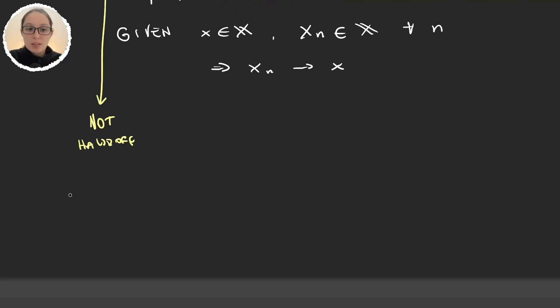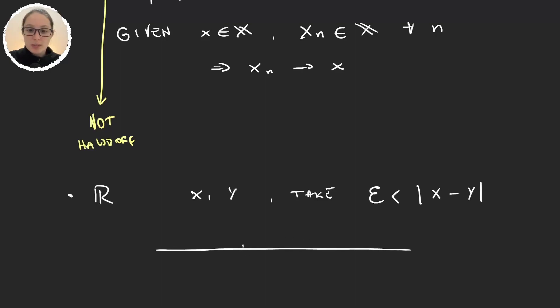However if we talk about the real line with a standard topology, given x and y we can always take epsilon to be a number smaller than the distance between x and y. So what we're doing is if this number is x and here is y then the interval (x - epsilon/2, x + epsilon/2) and the set (y - epsilon/2, y + epsilon/2).